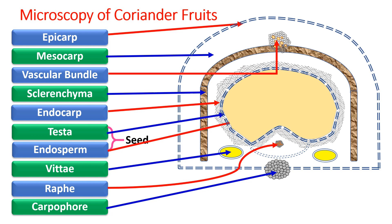Raphae are also present. These raphae form a single smaller bunch of vascular bundle passing through the center. Lastly, the carpophore is a group or bundle of cells that joins two mericarps to form a cremocarpus fruit.